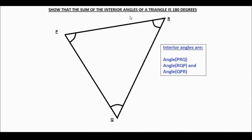Show that the sum of the interior angles of a triangle is 180 degrees. The triangle PQR is given. The interior angles are angle PRQ, angle RQP, and angle QPR — these three angles. We need to show that the sum of these three interior angles is 180 degrees.